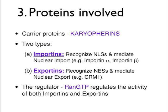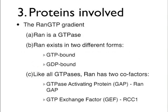Besides the carrier proteins, there is also a master regulator of nuclear-cytoplasmic transport: RAN-GTP. RAN-GTP regulates the activity of both importins and exportins by regulating the formation and disruption of import as well as export complexes. RAN is a GTPase — a protein able to hydrolyze GTP — and therefore RAN exists in two forms: a GTP-bound form and a GDP-bound form.